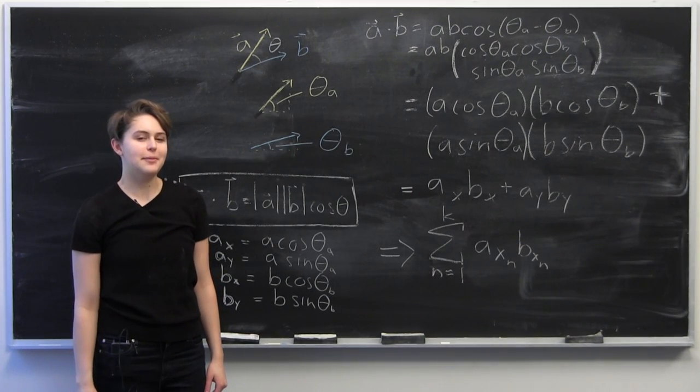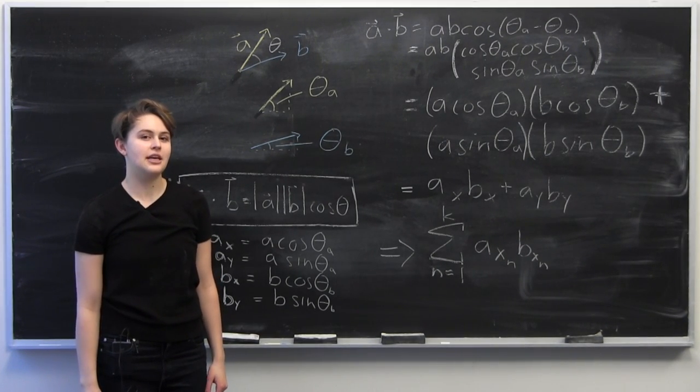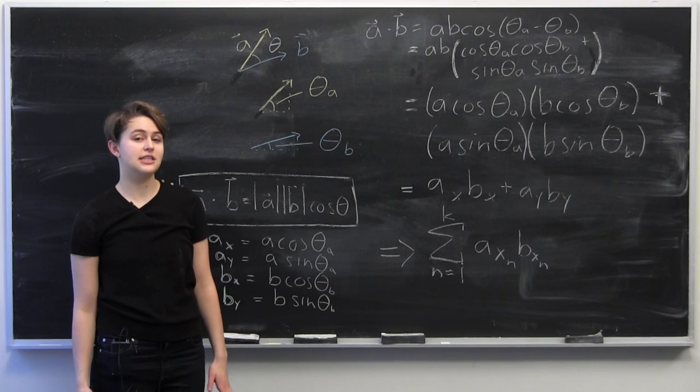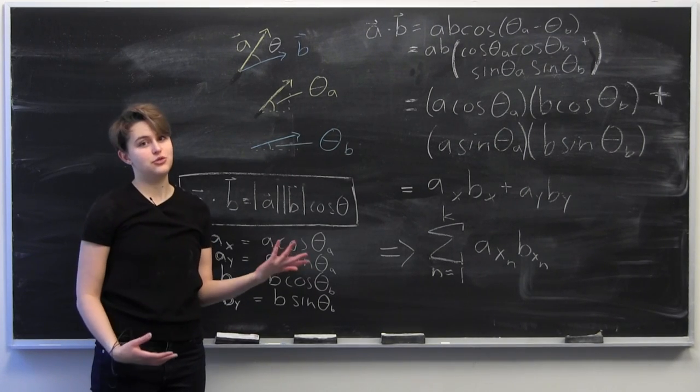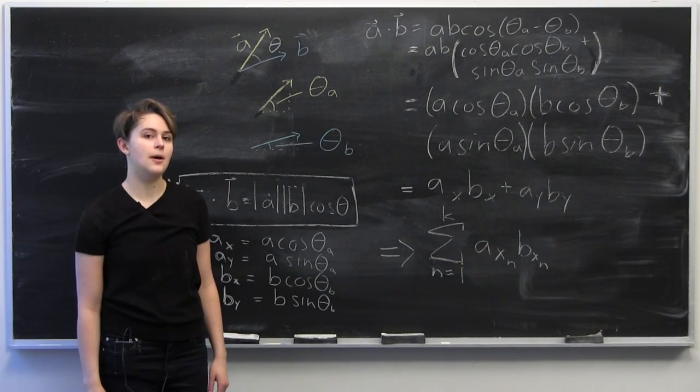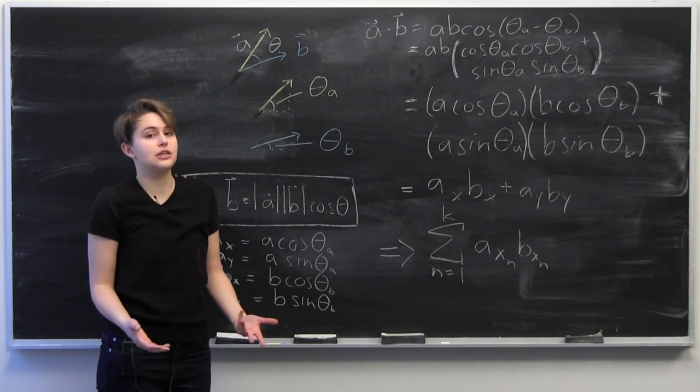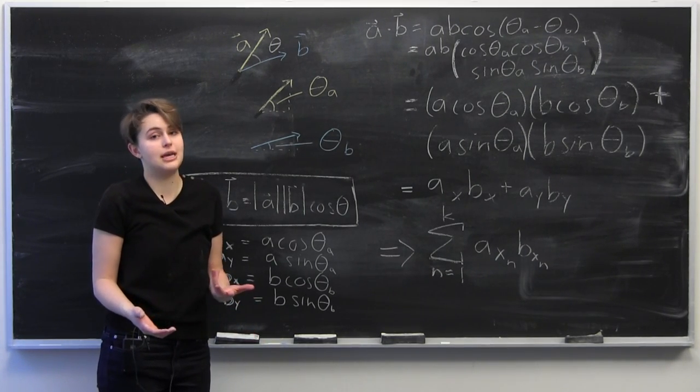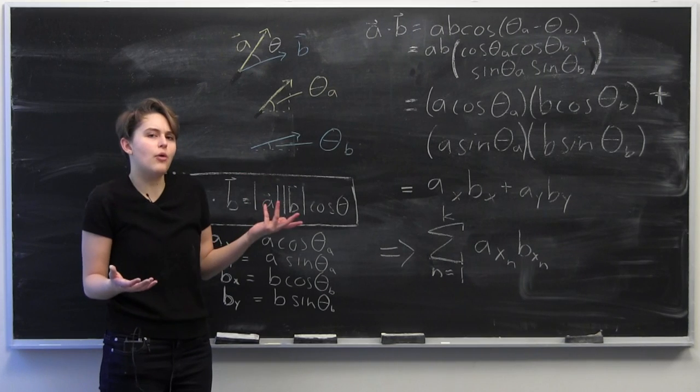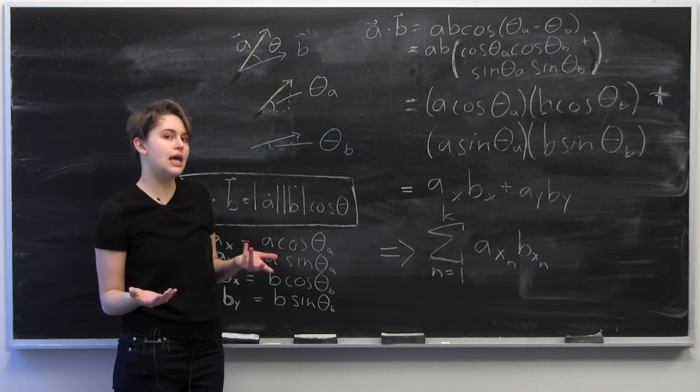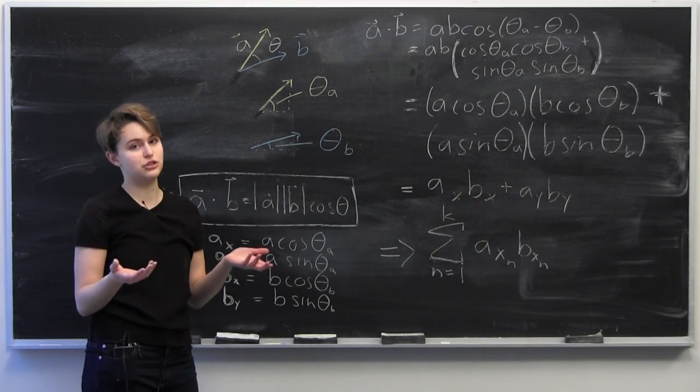Today I saw a comment on a YouTube video requesting a proof of the dot product using the definition. So I decided to do a short video explaining why the dot product, which seems obvious to us who have taken calculus or know anything about vectors, but why is the dot product formula what it is? Today I'm going to briefly explain a geometric proof.